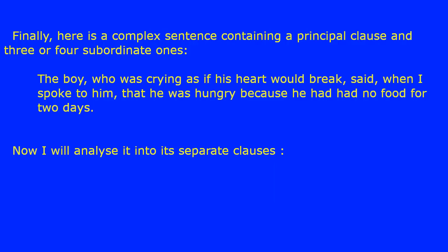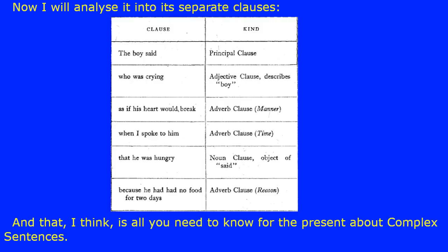Here is a complex sentence containing a principal clause and three or four subordinate ones: 'the boy who was crying as if his heart would break said when I spoke to him that he was hungry because he had had no food for two days.' Analysis: 'the boy said' — principal clause; 'who was crying' — adjective clause, describes 'boy'; 'as if his heart would break' — adverb clause of manner; 'when I spoke to him' — adverb clause of time; 'that he was hungry' — noun clause, object of 'said'; 'because he had had no food for two days' — adverb clause of reason.